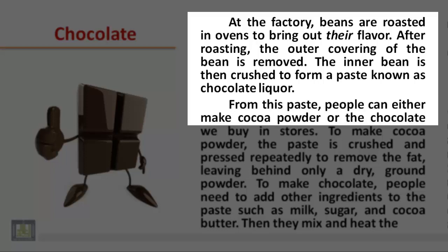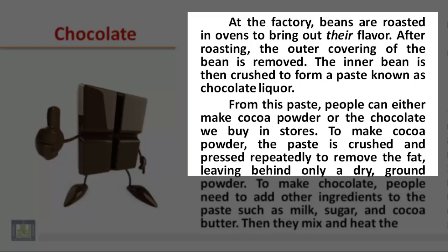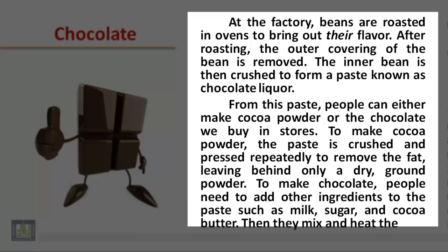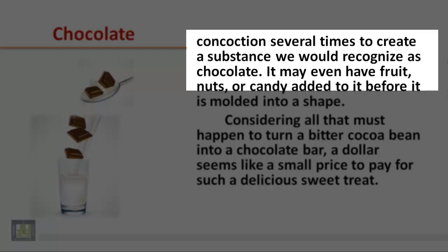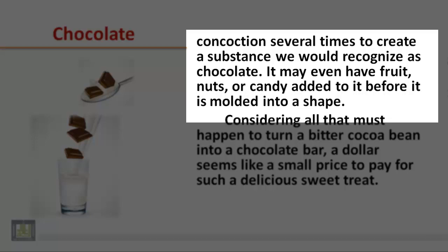From this paste, people can either make cocoa powder or the chocolate we buy in stores. To make cocoa powder, the paste is crushed and pressed repeatedly to remove the fat, leaving behind only a dry ground powder. To make chocolate, people need to add other ingredients to the paste such as milk, sugar, and cocoa butter. Then they mix and heat the concoction several times to create a substance we would recognize as chocolate. It may even have fruit, nuts, or candy added to it before it is molded into a shape.